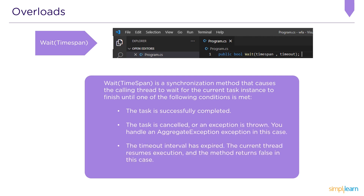Wait(TimeSpan) is a synchronization method that causes the calling thread to wait for the current task instance to finish until one of the following conditions is met: the task completes successfully, the task is cancelled or an exception is thrown — you handle an AggregateException in this case — or the timeout interval has expired, at which point the current thread resumes execution and the method returns false.